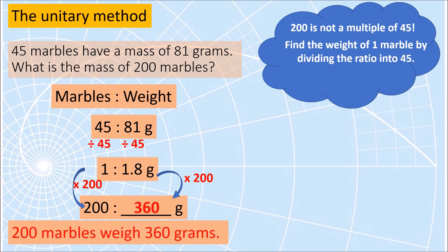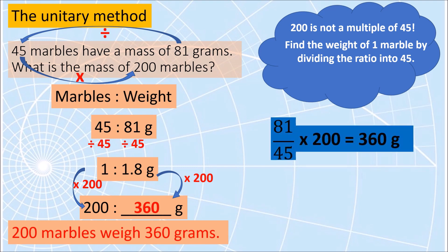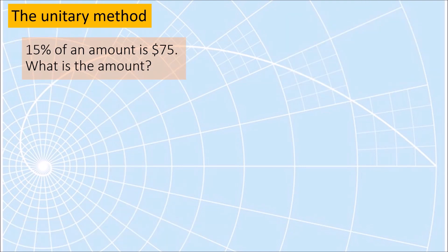Do the same on the other side — multiply by 200. So 1.8 times 200 is 360 grams, meaning 200 marbles weigh 360 grams. We could have done this quickly by writing 81 over 45 times 200 to get 360 grams — the same answer. Try solving this problem on your notebook using the unitary method. Pause this video and come back when you are done to check your work.